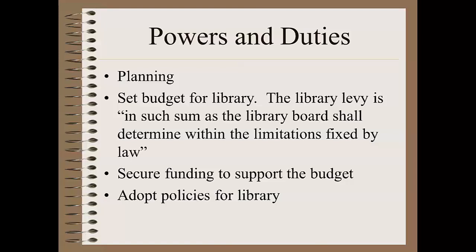The key is: what are those limitations? The city can pass a charter ordinance setting a maximum mill levy. But if there's no charter ordinance, the city must levy the amount necessary to fund the budget adopted by the library board. And if there is a charter ordinance, they still have to levy the amount as long as it doesn't go over the cap. For now, let's note that it's a duty of the library board to adopt a budget for the library, and this budget should be based on the plan the board has developed.